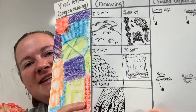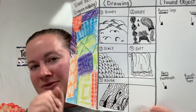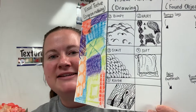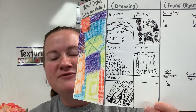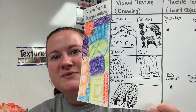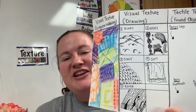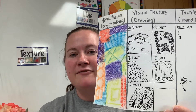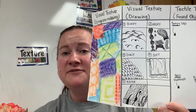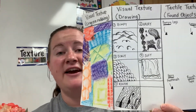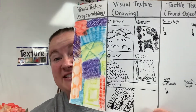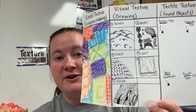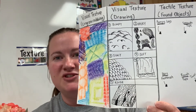Here are some examples that I chose: hairy, bumpy, scaly, soft, rough. In our playlist on our learning system, I have different examples of how to get started with creating these different textures — kind of like idea boards from other artists that I want you to try out.